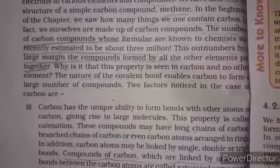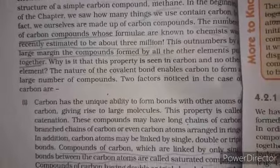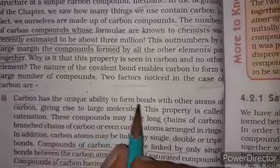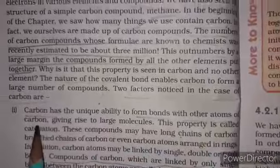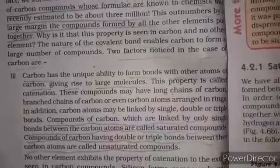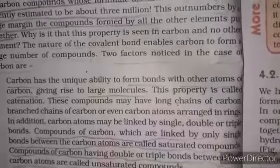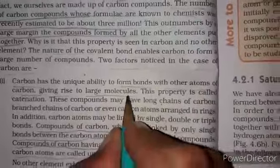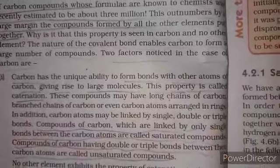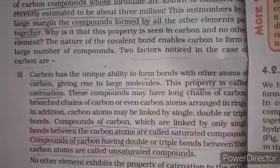There are two factors behind the versatile or anomalous nature of carbon. The first property: carbon has the unique ability to form bonds with other atoms of carbon, giving rise to large molecules. This means carbon atoms can share electrons with other carbon atoms to form large molecules. This property is called catenation.